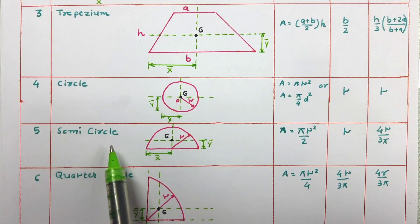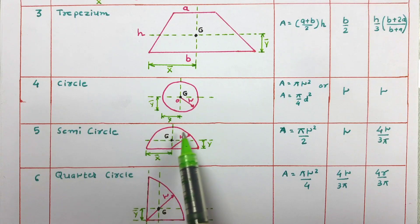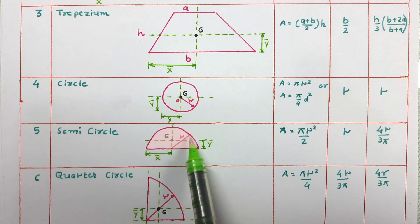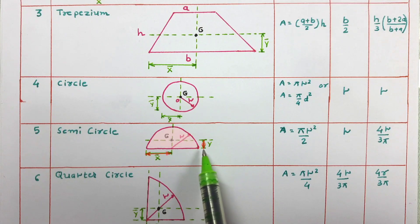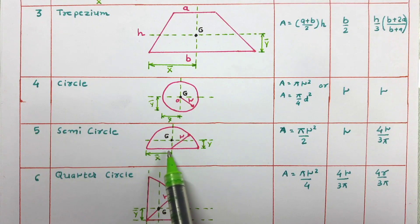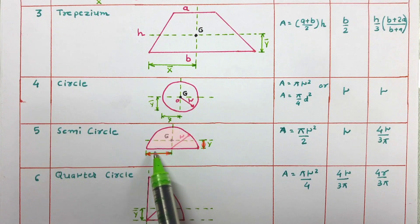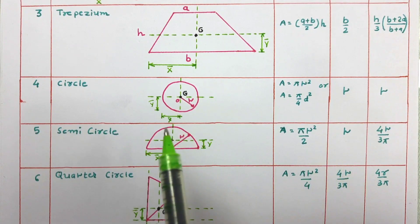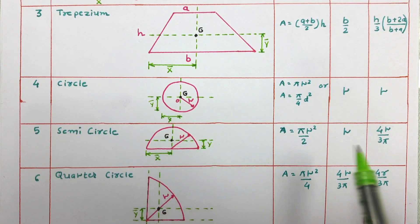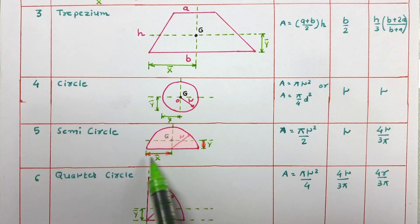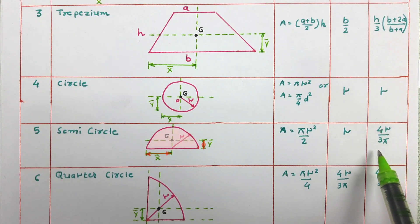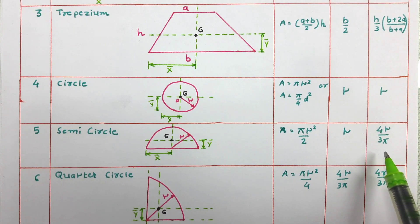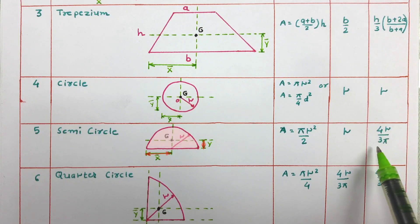The next two-dimensional figure is the semicircle, having radius r. The centroid of the semicircle is at x-bar distance along the x-axis and y-bar distance along the y-axis. From the figure, x-bar equals r. The y-bar is a special case — you have to remember it: y-bar equals 4r by 3pi. The area of a semicircle is pi r squared by 2.